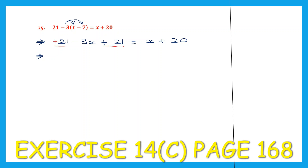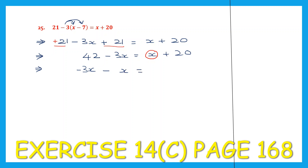21 plus 21 is 42. And we have minus 3x. And on the right hand side we have x plus 20. Now we have x on both sides and numbers on both sides. So let's put all the x together. We already have minus 3x. Now we're going to transpose x from the right hand side to the left. It becomes minus x.